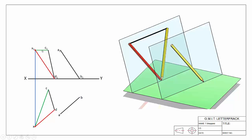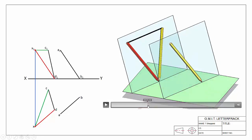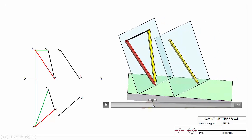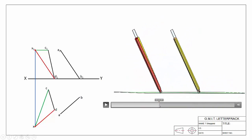And we know that if we look along a true-length line, we're going to see that line as a point view, and the plane it's resting on will be seen as an edge view. Imagine looking along the line and watching the plane as we do so — as we look along the line, the line appears as a point and the plane appears as an edge.